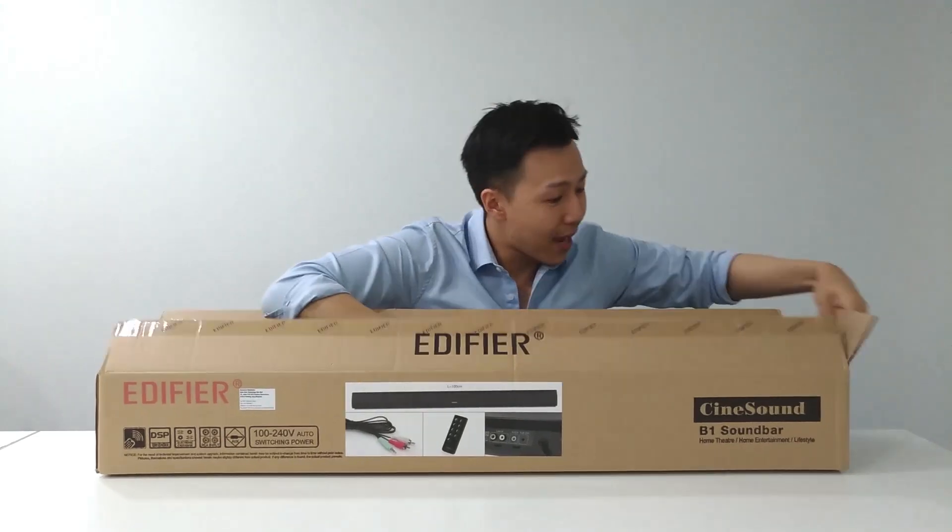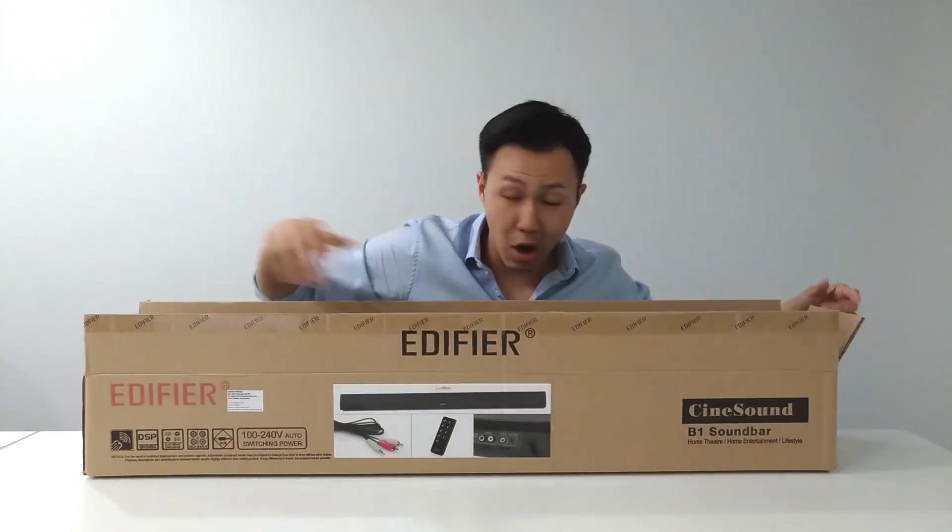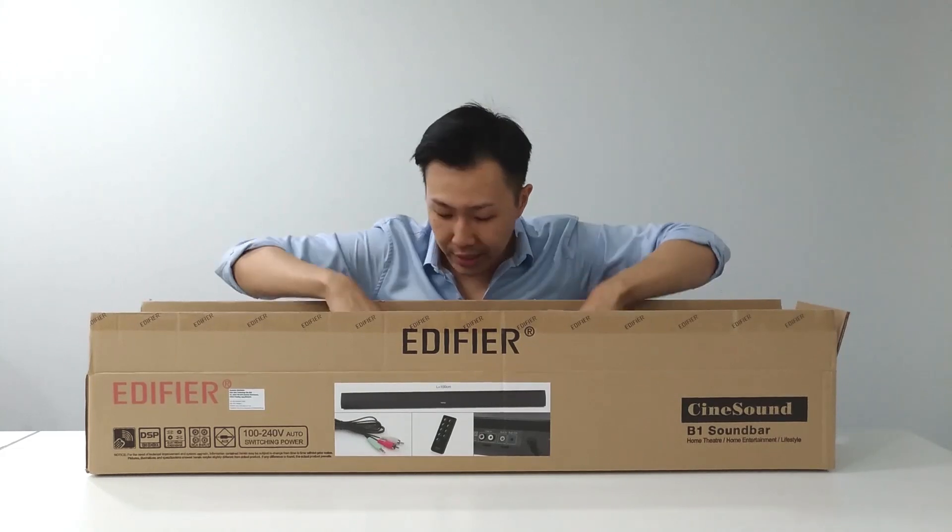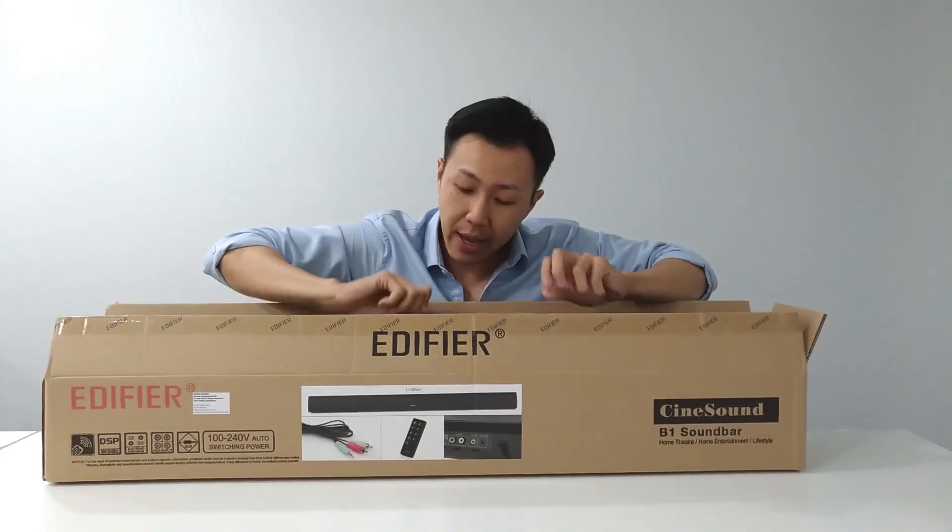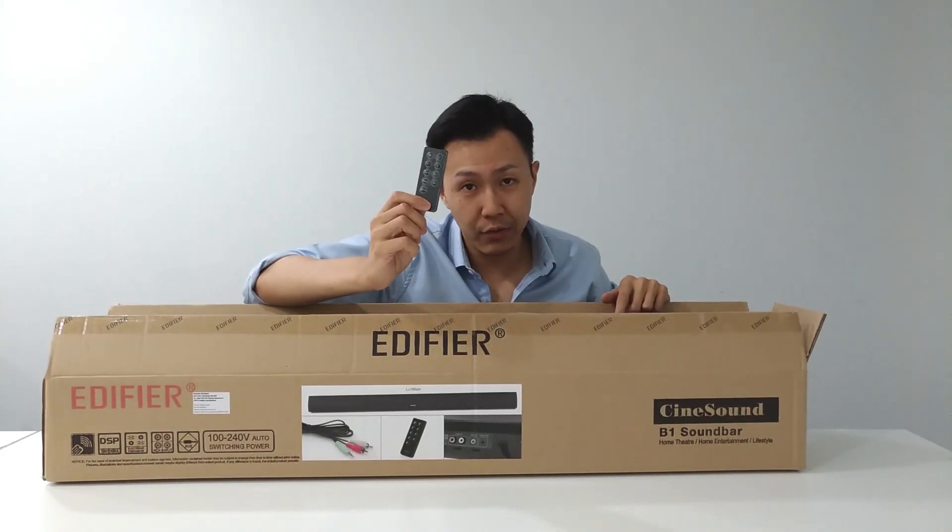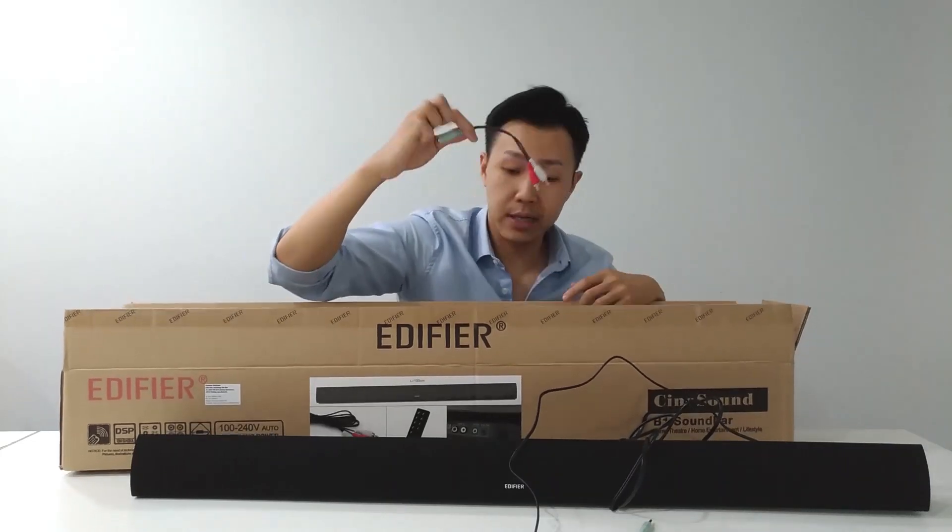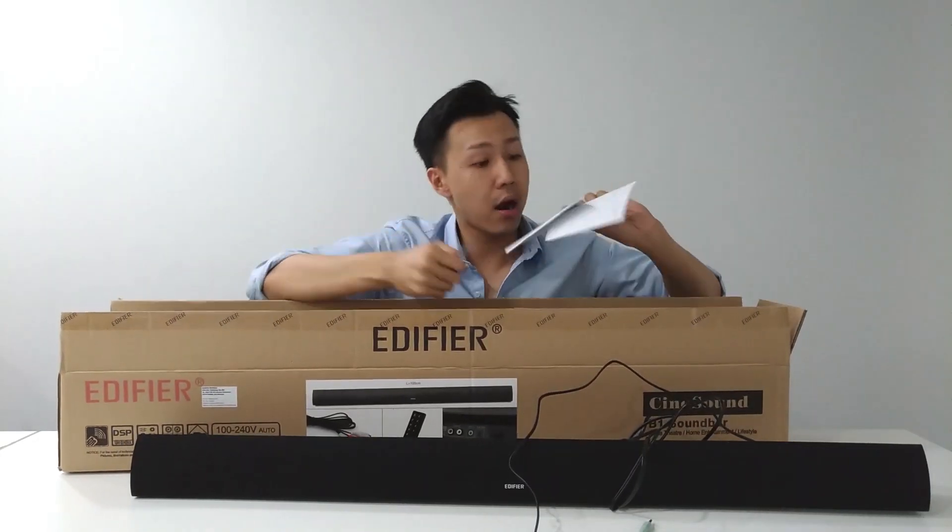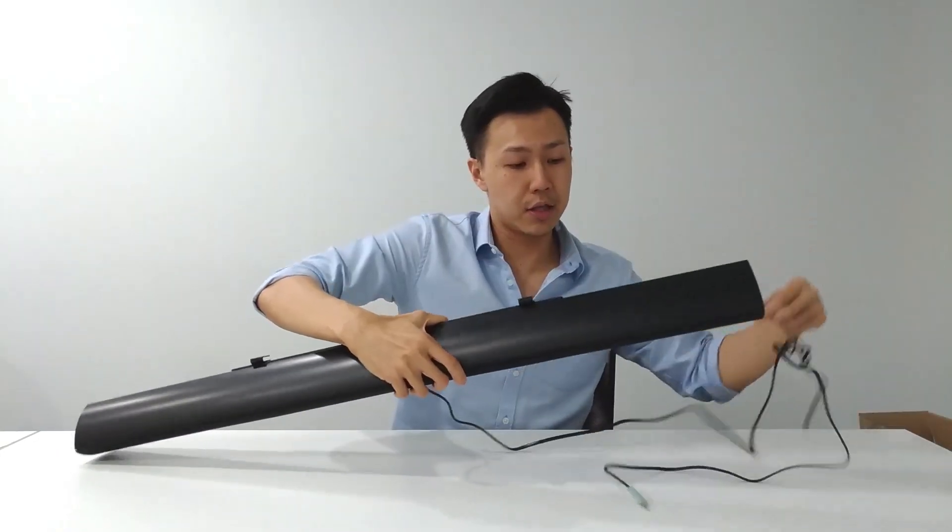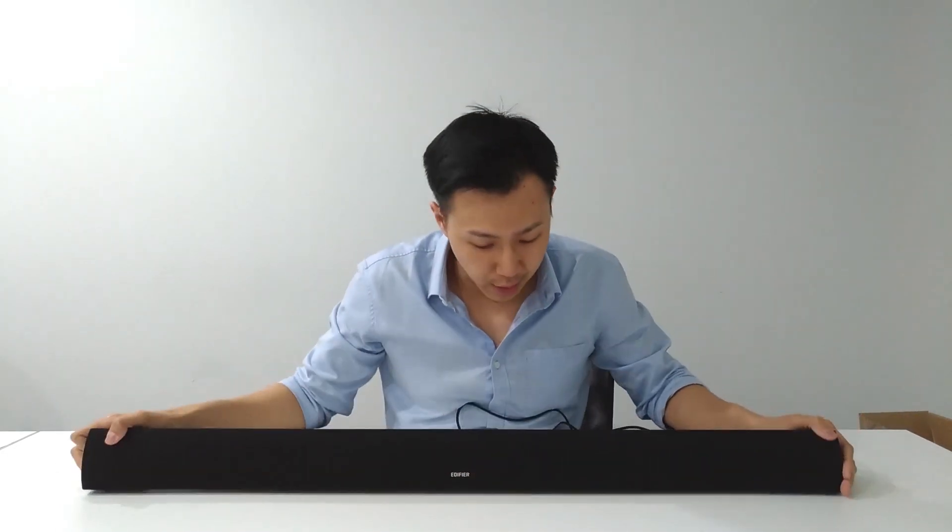Right now in the box we have a very long soundbar as you can see. First off, we have a very nice and shiny remote, connector cable, warranty card, manual, and the main Edifier itself.